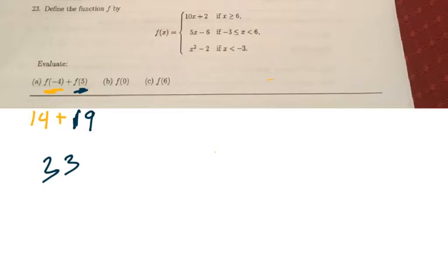The next one is going to be f of 0. So again, you have to decide where 0 is. 0, of course, is in the middle. It's between negative 3 and 6. And I just substitute it. So this is 5 times 0 minus 6, or simply negative 6. So b is negative 6.